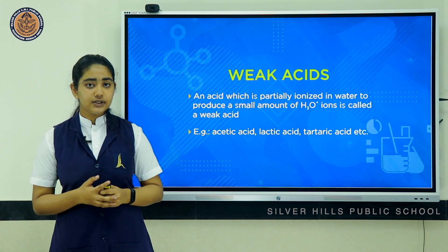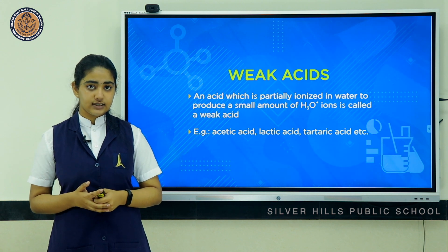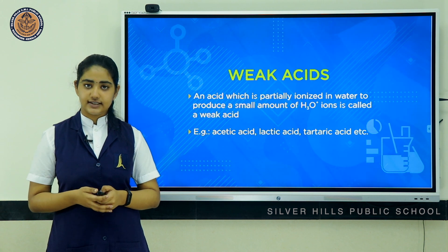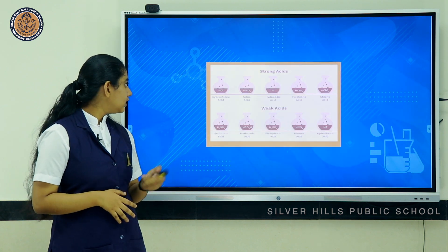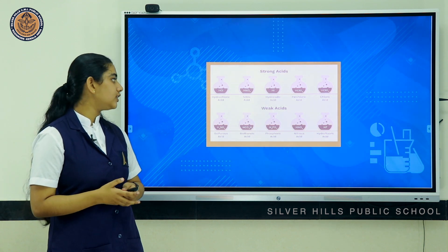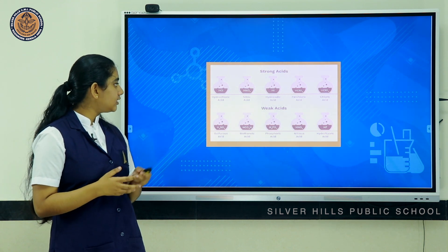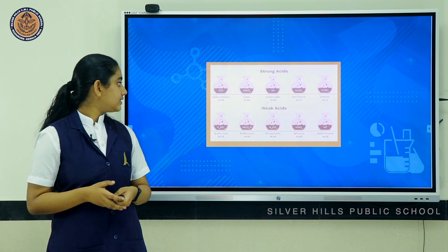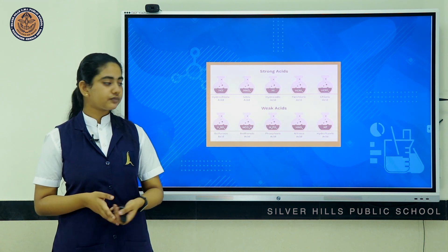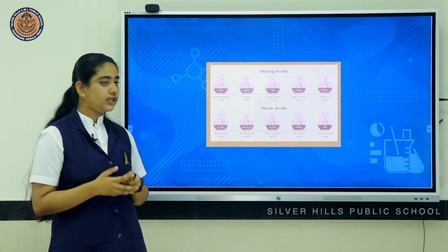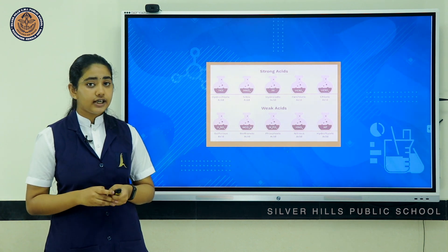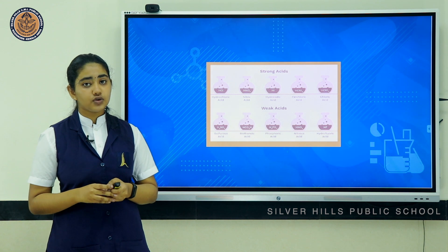Examples of strong acids include mineral acids such as hydrochloric acid, sulfuric acid, nitric acid, etc. Examples of weak acids include organic acids such as acetic acid, lactic acid, citric acid, etc. Some of the strong and weak acids are listed here. Strong acids include hydrochloric acid, nitric acid, hydroiodic acid, perchloric acid, chloric acid, etc. Weak acids include sulfurous acid, methanoic acid, phosphoric acid, nitrous acid, and hydrofluoric acid.